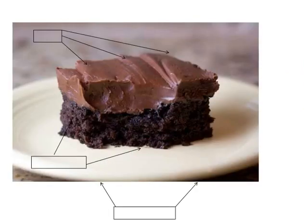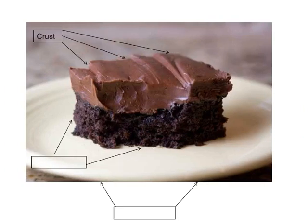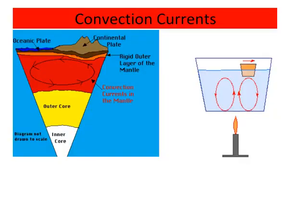Here is an example showing the layers: crust, lithosphere, asthenosphere, and convection currents.